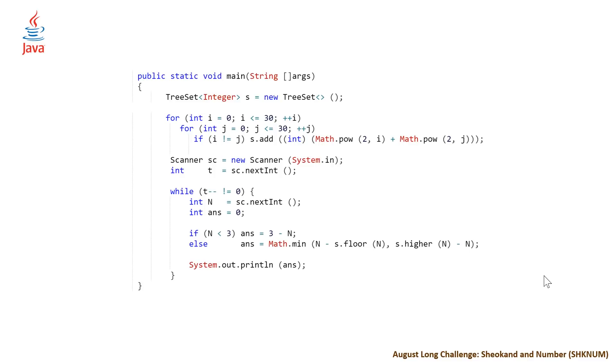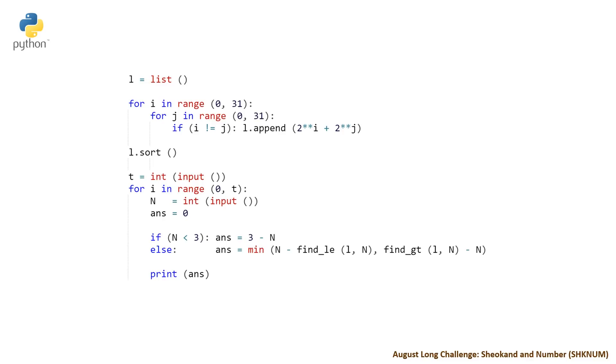The last solution is our Python solution. Once again, usually the shortest of all of them. Here we don't have set, so we're using a list and then sort it, with the nested for loop again, making a call to the append method to add our values to the end of our list. Then reading in T and for each T reading an n. We're setting answer equal to three minus n for our corner case.